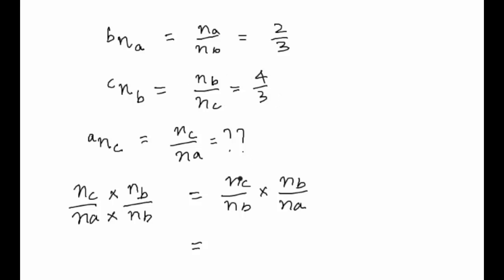Since NB by NC equals 4/3, NC by NB will be 3/4. And since NA by NB equals 2/3, NB by NA will be 3/2. So NC by NA equals 3/4 multiplied by 3/2, which gives us 9 by 8.